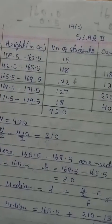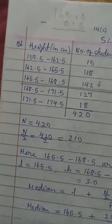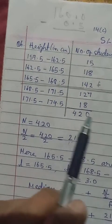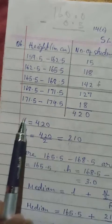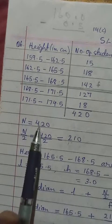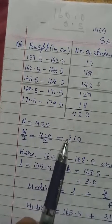Now we can apply the formula. So to apply the formula, we need to find first the median class. We have the total frequency 420. So we divide by 2. So 420 divide by 2, we get 210.